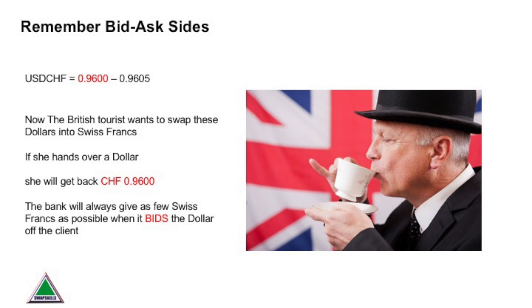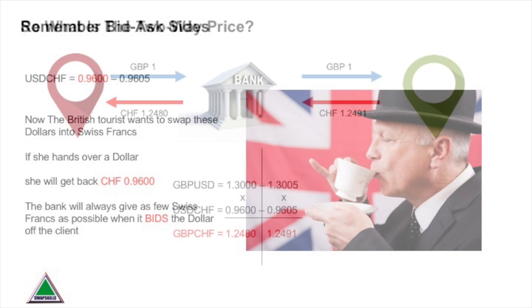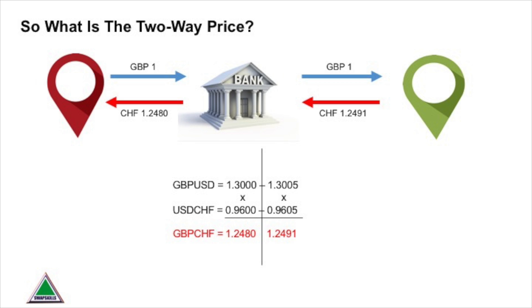Armed with these dollars, the client wants to now swap them into Swiss francs. For every dollar the client hands over, the bank is going to give as few Swiss francs as possible — in this case, 96 centimes for every dollar. So here's the bigger picture of what's going on from the bank's point of view, and you can see how they're making their money.